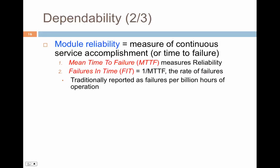Module reliability is generally a measure of continuous service accomplishment, or what we call time to fail. The first measure is mean time to fail, MTTF, which measures reliability — the expected time for the system to fail. If you model failure as an exponential distribution, MTTF is the expected value of that random variable. Failure in FIT is the actual metric of 1 divided by MTTF, which is the rate of failure. In an exponential distribution, this is the parameter lambda — the rate at which failure occurs — and we report this as failure in billions of hours of operation.